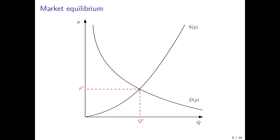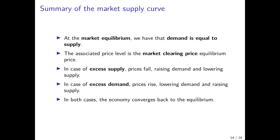So we've seen that the equilibrium is stable. Starting with a higher price level we converge to the equilibrium from above; starting with a lower price level we converge from below. To summarize: at the market equilibrium demand equals supply, and the associated price level is the market clearing equilibrium price. In case of excess supply, prices fall, which raises demand and lowers supply, converging from above. In case of excess demand, prices rise, lowering demand and raising supply, converging to equilibrium from below.